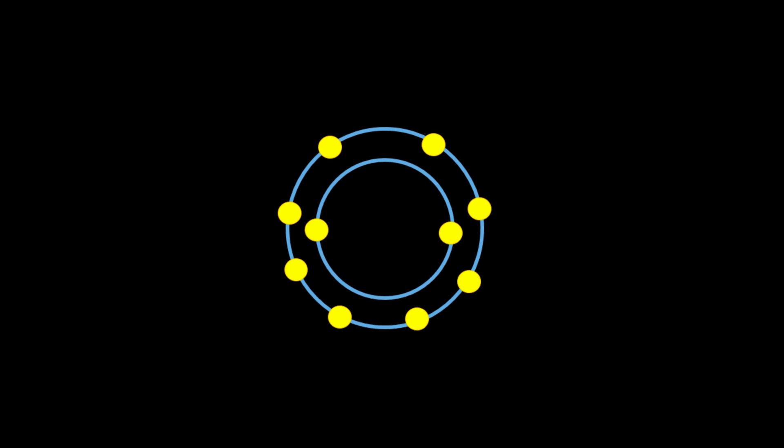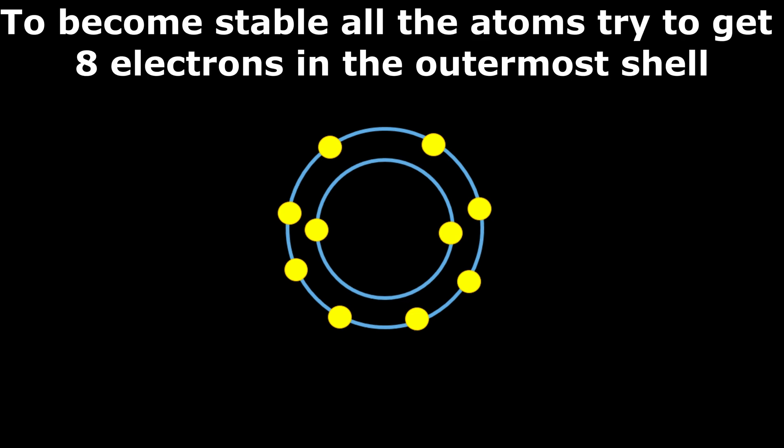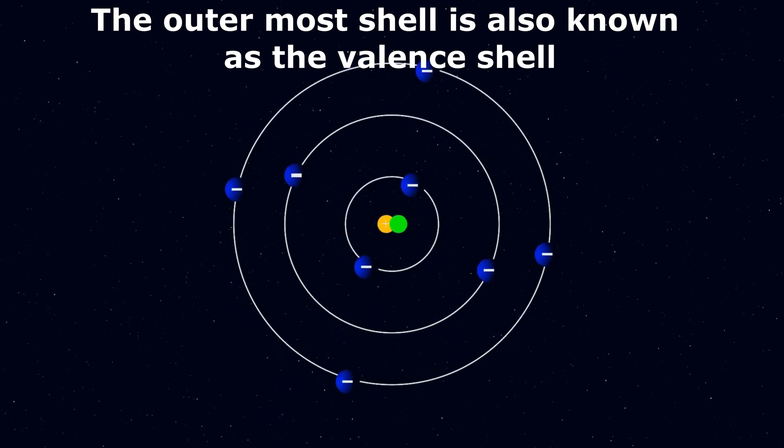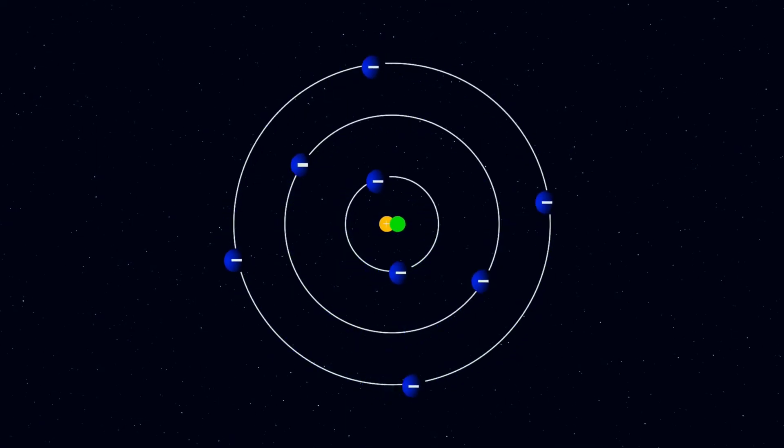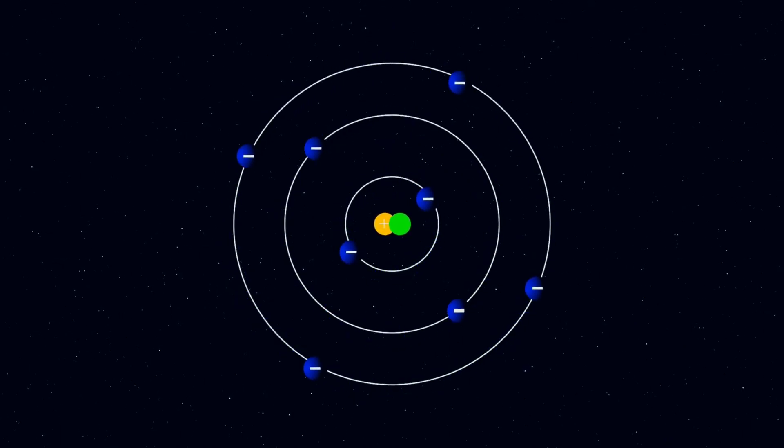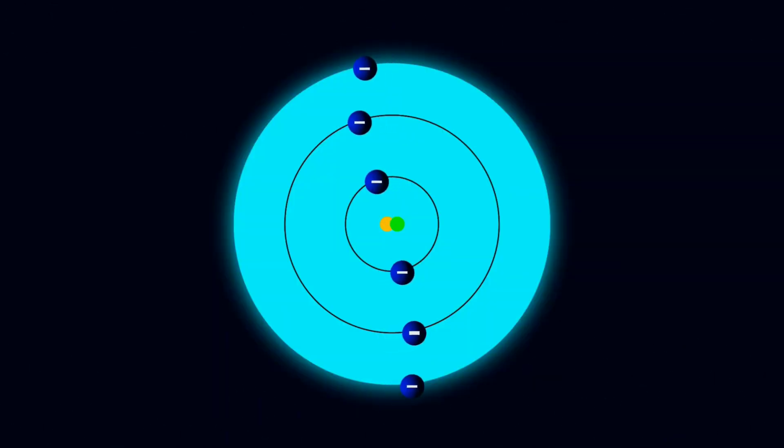It has been found that to become stable, all the atoms try to get 8 electrons in the outermost shell. The outermost shell is also known as the valence shell. Please note that the electrons present in the valence shell take part in all the chemical reactions. But why only the valence shell electrons?